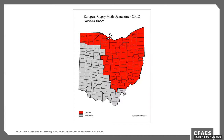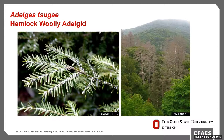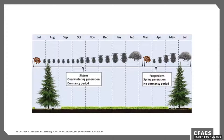Our next insect is the hemlock woolly adelgid, which has a very unique life cycle. All of the insects are female, developing parthenogenetically or asexually. There are six stages of development: an egg, four nymphal instars, and the adult. There are two overlapping generations per year. The overwintering generation, or sistens, is present from early summer through mid-spring, and the spring generation, or progrediens, is present from early spring through mid-summer.